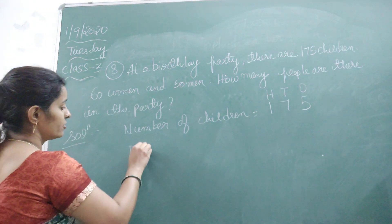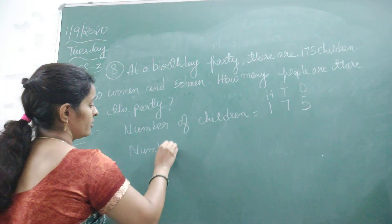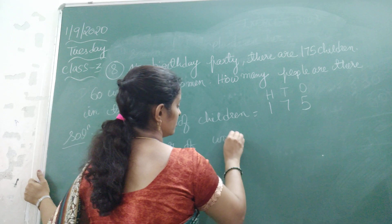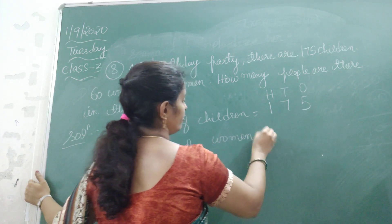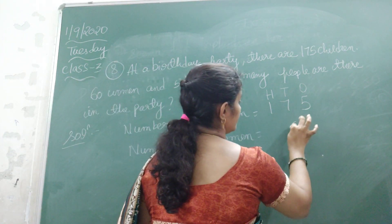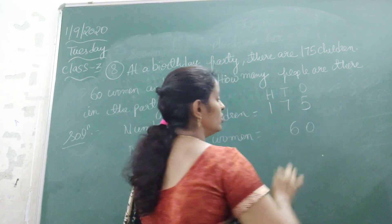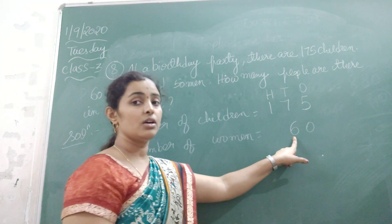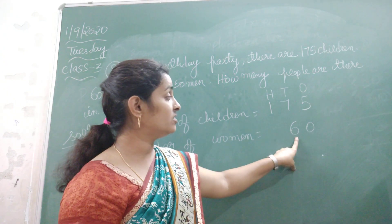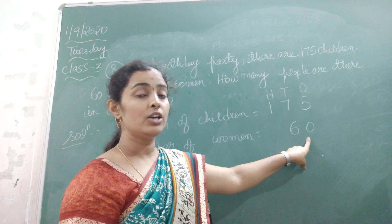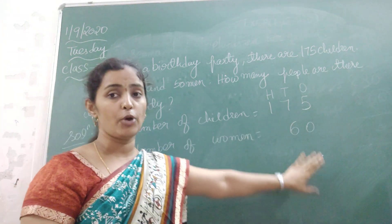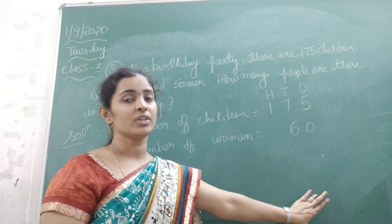Next, number of women. How many women are there in the party? That is 60 — six in the tens place and zero in the ones place. We need to write it in a proper way. Then only we can add.